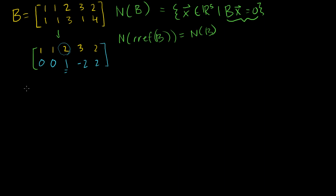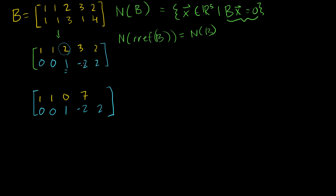Let me get rid of that entry by replacing row 1 with row 1 minus 2 times row 2. Row 2 stays the same: 0, 0, 1, minus 2, 2. And row 1 becomes: 1 minus 2 times 0 is 1; 1 minus 2 times 0 is 1; 2 minus 2 times 1 is 0; 3 minus 2 times minus 2 — that's 3 plus 4 is 7; and 2 minus 2 times 2 is minus 2. So this is the reduced row echelon form of B.